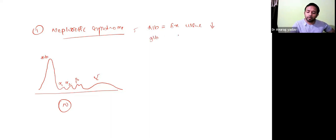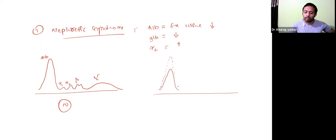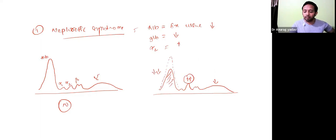In nephrotic syndrome, globulin concentration increases to exchange — specifically alpha-2 macroglobulin concentration starts increasing. So on electrophoresis, instead of the tall albumin peak, albumin will be less than normal. Alpha-2 becomes tall — its concentration increases. The gamma portion is also reduced. So albumin is reduced, alpha-2 is increased, and gamma globulin is also decreased.